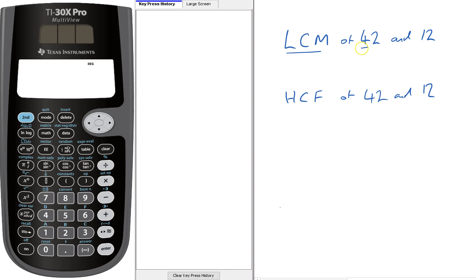Okay, suppose we want the lowest common multiple of 42 and 12. We use calculator. Math, and immediately it comes up here. The lowest common multiple.